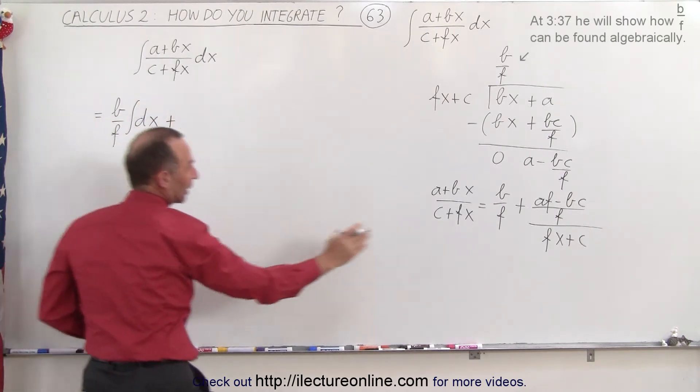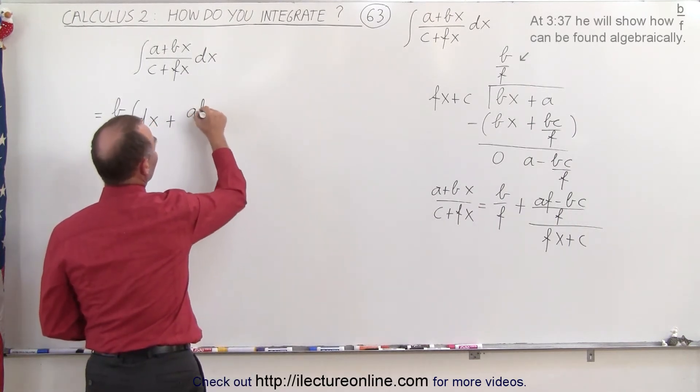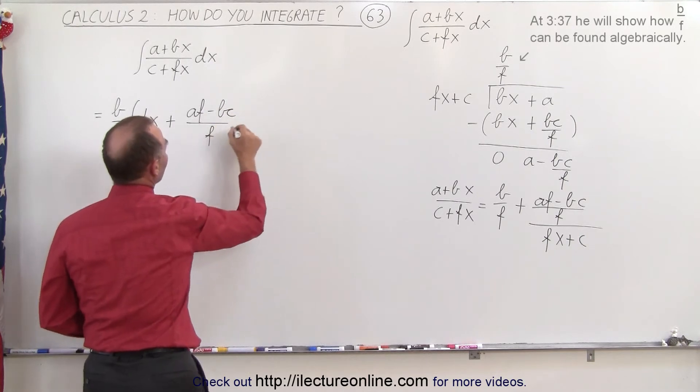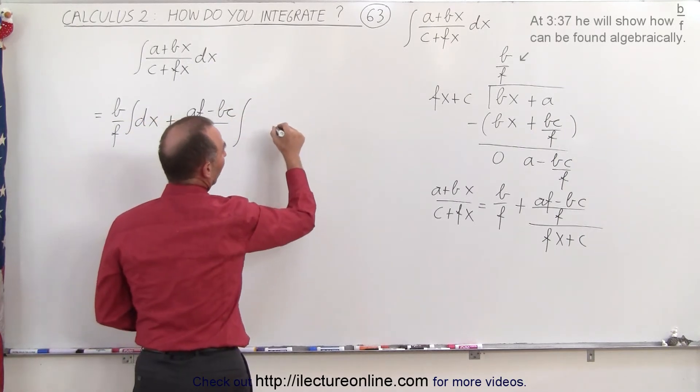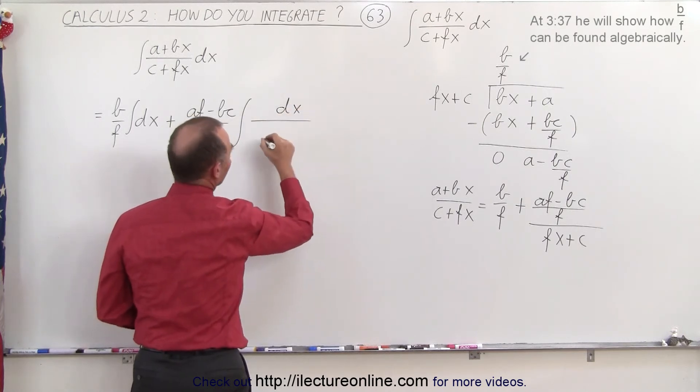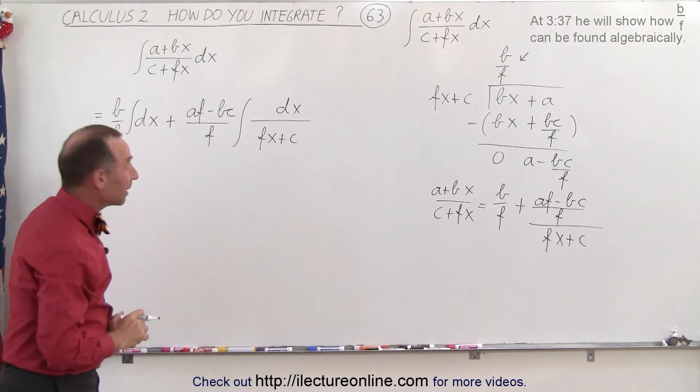plus, and we can take all that out of the integral sign as well, so we have af minus bc over f times the integral of dx, the numerator divided by fx plus c, or c plus fx, however you want to write that. Okay, now that looks a lot better because this is easy to integrate, and this is relatively easy to integrate as well,